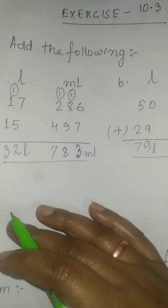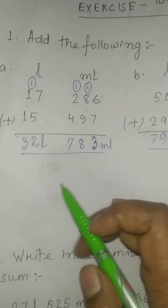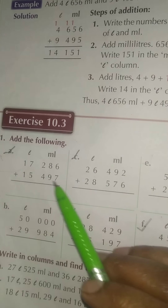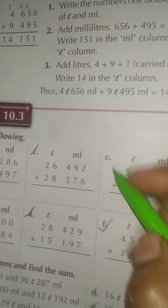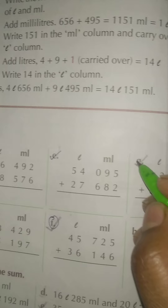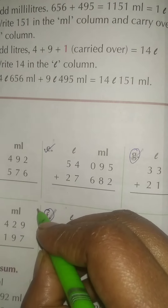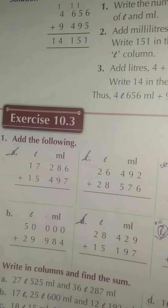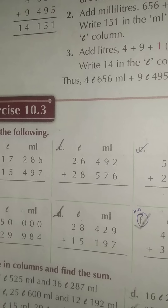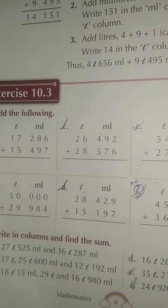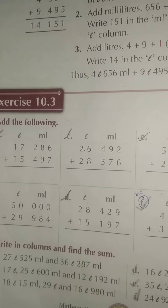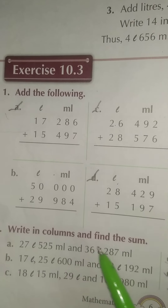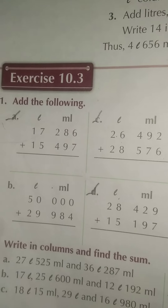Is it clear to you, students? I have shown you question A and B. So the rest of the questions — C, D, and E — you will solve as classwork, and F, G, and H you will do as your homework. Don't forget to complete your homework. Now question number 2 says: write in columns and find the sum. This question we will also solve in our classwork copy.